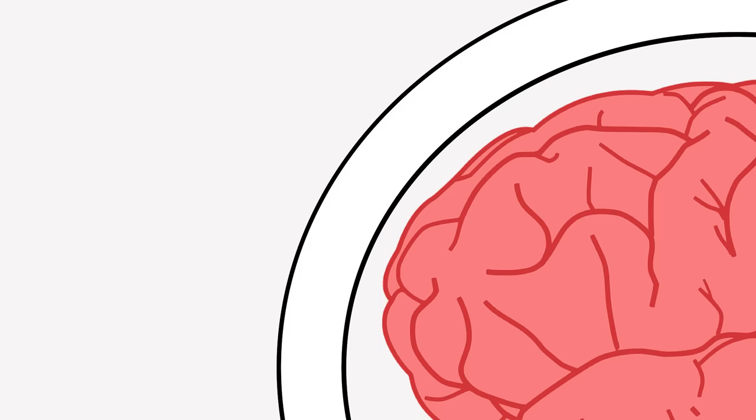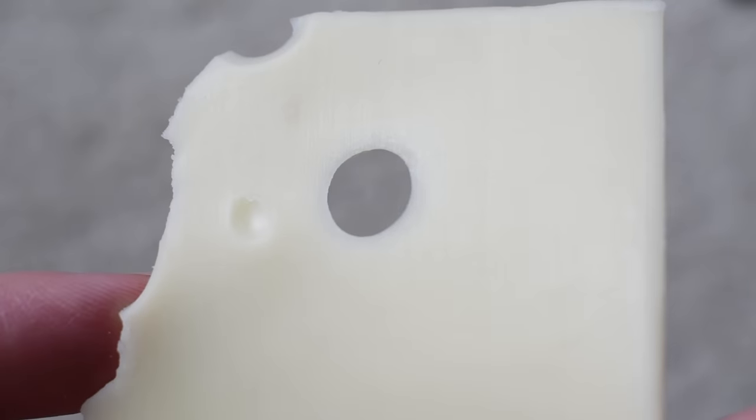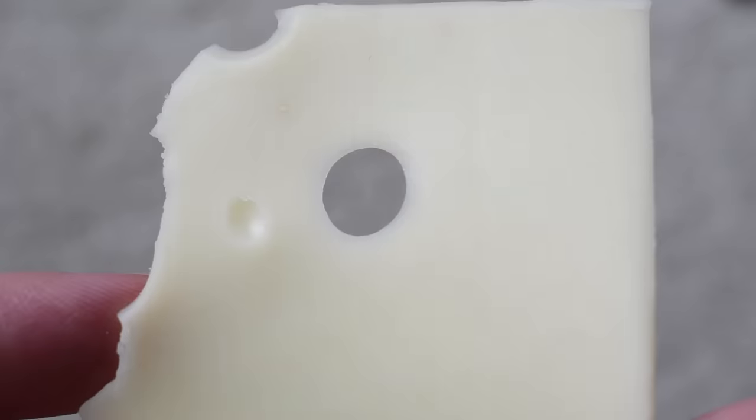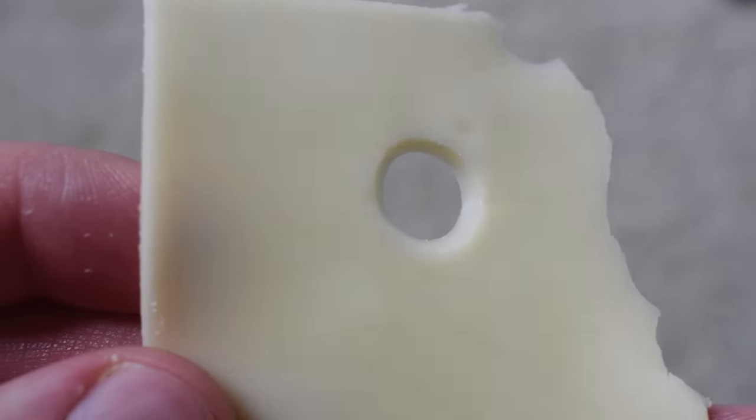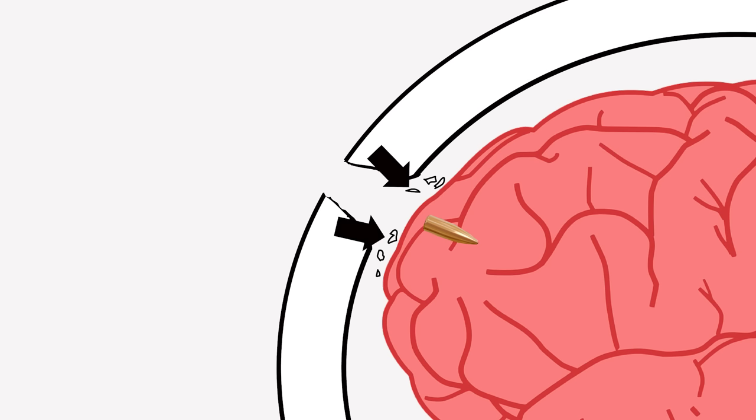As for the interior of the skull, the bullet causes the bone to bevel. The best way I can illustrate this process of beveling is with a piece of Swiss cheese. This side of the cheese is where the bullet enters, and is very clean and small. This side is where the bullet exits, and is very wide and flared out. This flaring chips pieces of the skull and launches them into the brain, causing more damage.